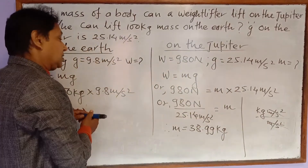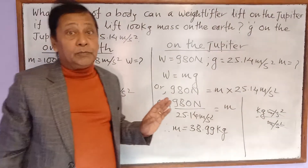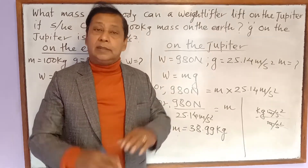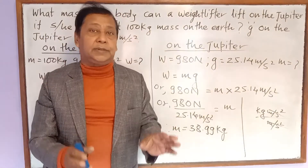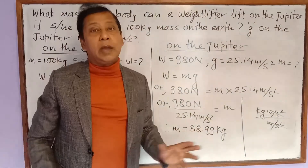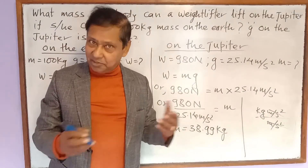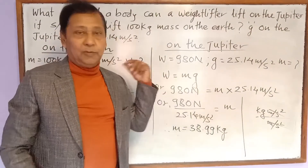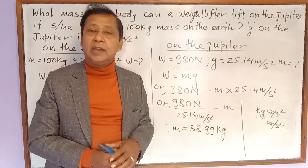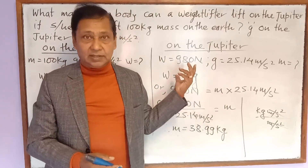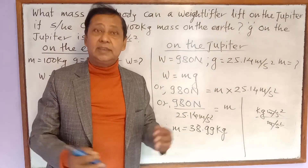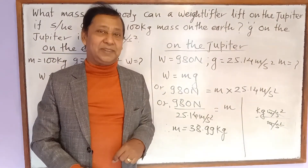So the final answer is: if a person can lift 100 kg on the surface of the Earth, he will not be able to lift the same 100 kg on Jupiter — he will only be able to lift 38.99 kg on Jupiter. This is the solution to this numerical problem. If you found this helpful, please subscribe to my channel and share these classes with your friends.